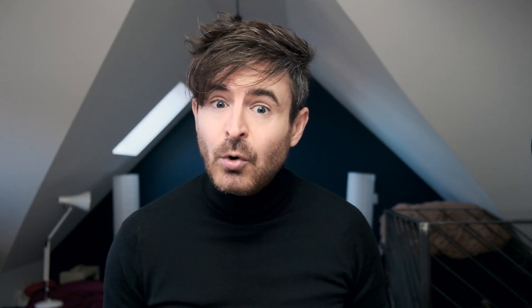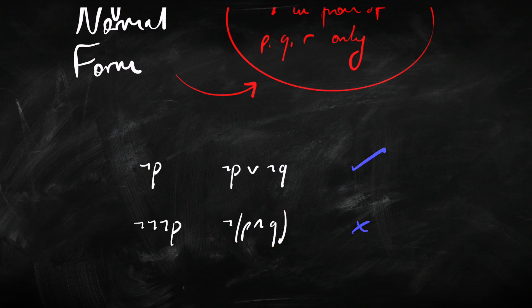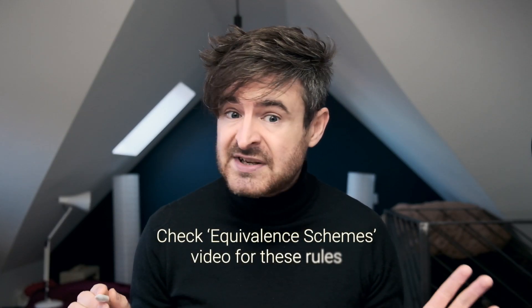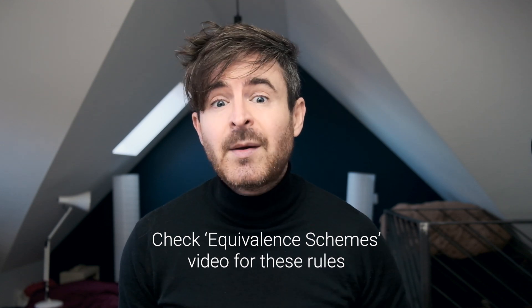So putting a sentence in negation normal form is usually pretty simple. It's a case of pushing the negations down the syntax tree. To do that, we're going to use the De Morgan laws, because they allow us to transform something whose main connective is a negation into something with the negations further down the syntax tree. And we're going to use double negation elimination. Those rules are pretty simple to use, so putting something in negation normal form is usually pretty easy.